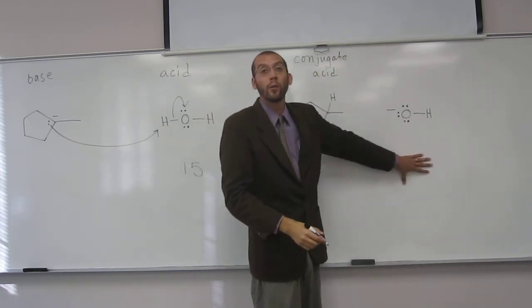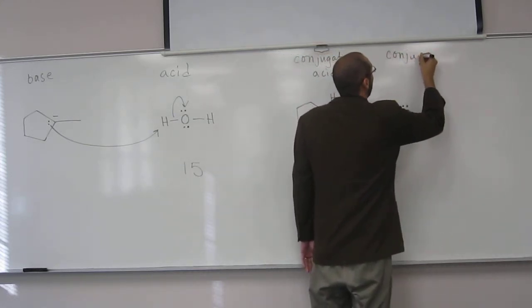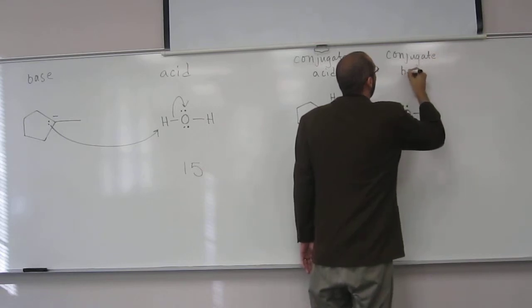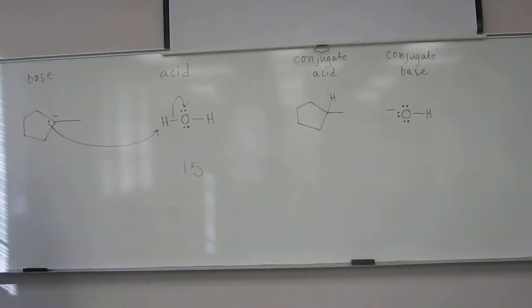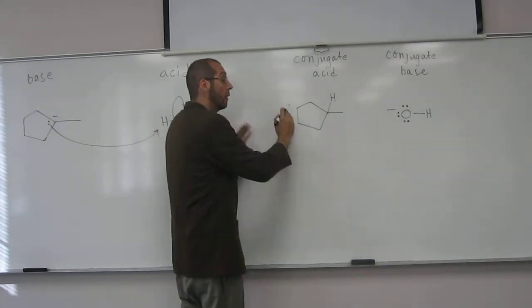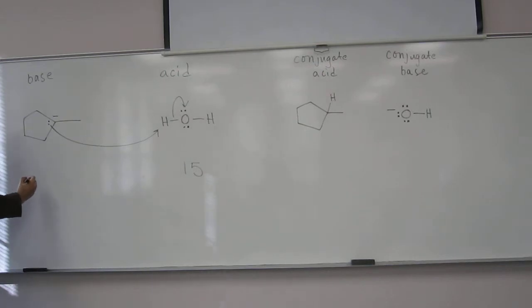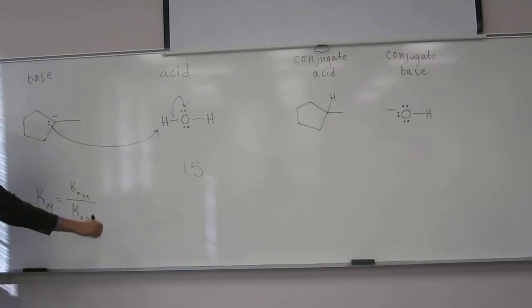And this thing here would be the conjugate base. So now what do we want to figure out? The KEQ. The KEQ, so we can determine what the arrows look like here. So the KEQ value, what do we need? KEQ equals what? Ka reactant acid over Ka product acid. You guys are awesome.